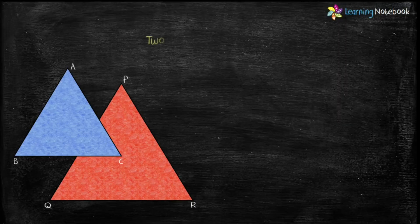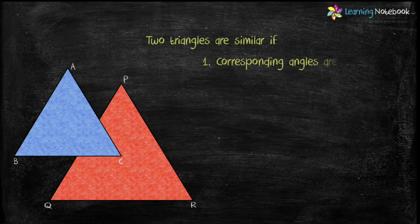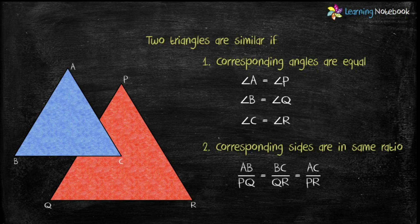So students, we know that two triangles are similar if, first, their corresponding angles are equal and second, if their corresponding sides are in the same ratio. Therefore, we can say triangle ABC is similar to triangle PQR.